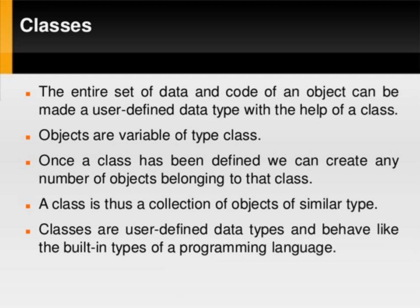The second basic concept of OOPs is classes. The entire set of data and code of an object can be made a user defined data type with the help of a class. Objects are variables of type class. Once a class has been defined, we can create any number of objects belonging to that class. A class is thus a collection of objects of similar type. Classes are user defined data types and behave like the built-in types of a programming language.